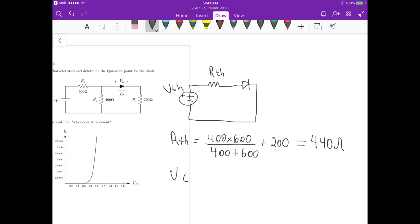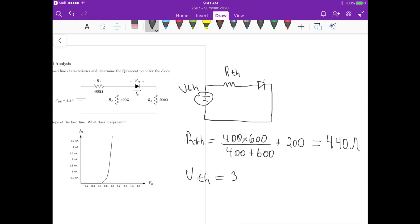Now the Thevenin voltage is just a voltage divider because if we look at the circuit as an open circuit on the terminals of R3 and the ground, then it would be just a voltage across the 400 ohms. So it's going to be those 3.3 volts times 400 divided by 400 plus 600. And this gives us 1.32 volts.